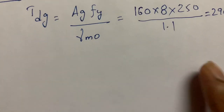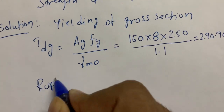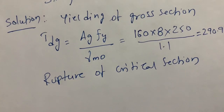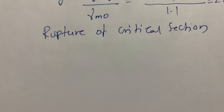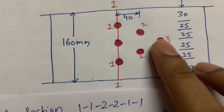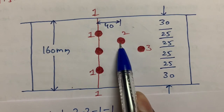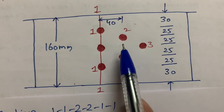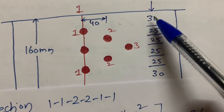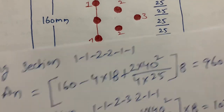The second failure mode is rupture of the critical section. In this diagram the zigzag bolting pattern is arranged so that we need to calculate three types of sections. The staggered pitch distance ps = 40 mm. The gauge distance g: from the plate edge to the first bolt center is 30 mm, and from that bolt center to the next bolt center is 25 mm.